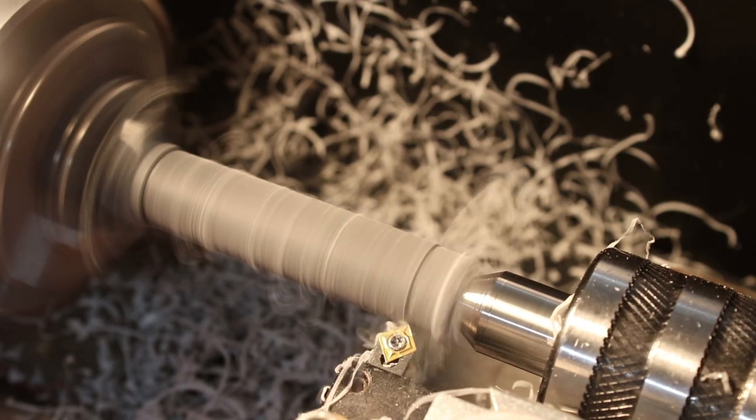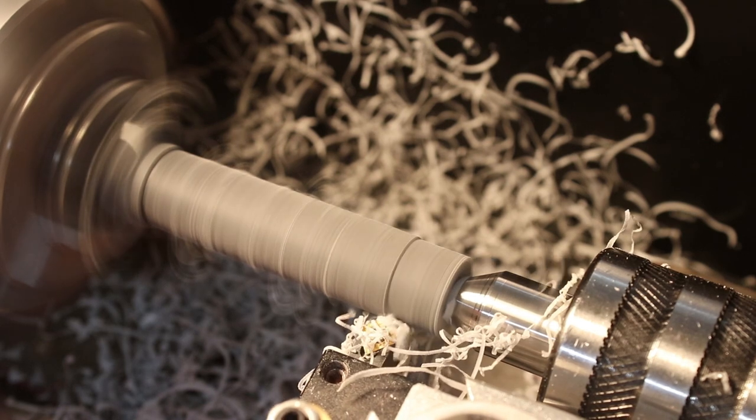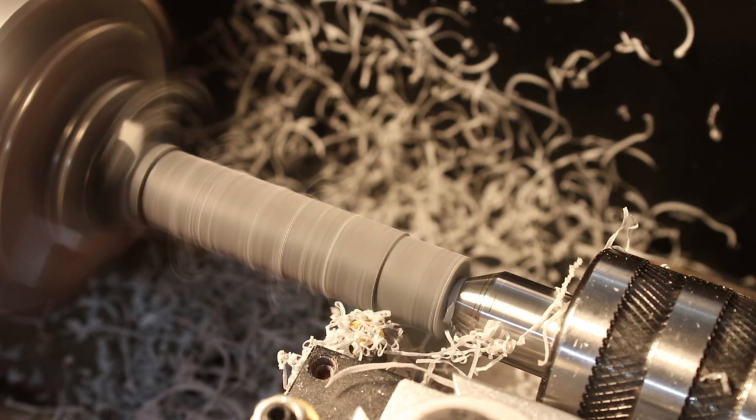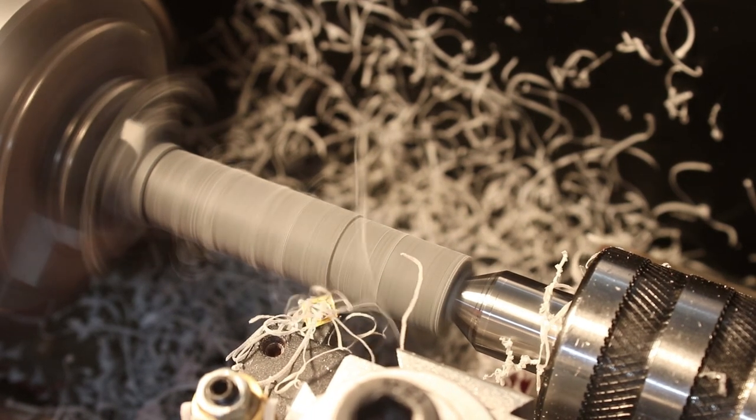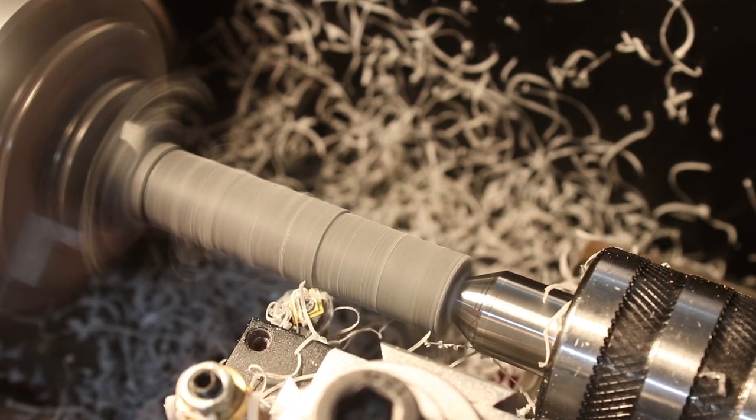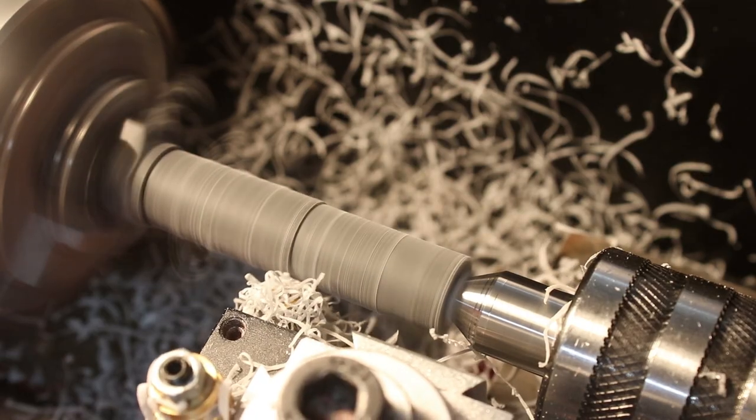Tip number one: if you haven't got your lathe yet, make sure you have a large roll of paper towels and wax and grease remover for when the lathe arrives. When they ship these lathes from the factory in China, they coat them in a really thick coat of red grease which you're going to need to remove before you can actually set up your lathe and use it.